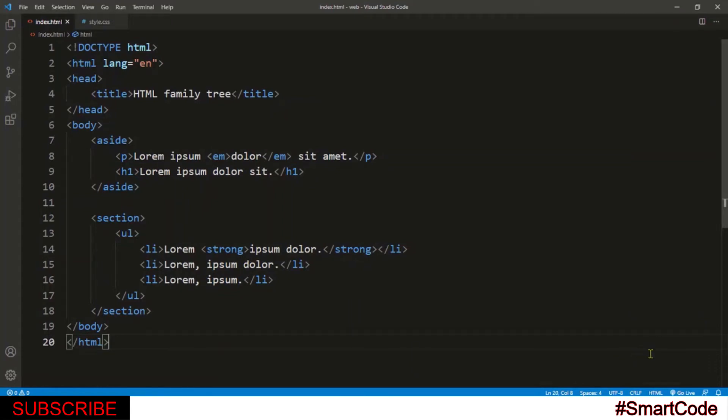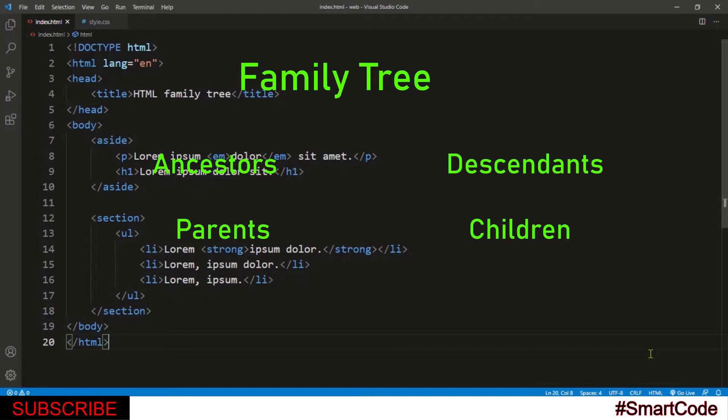Hello everyone and welcome to SmartCode. You may have heard about the term family tree. In a real-world family tree, there are ancestors and descendants, parents and children and of course siblings.